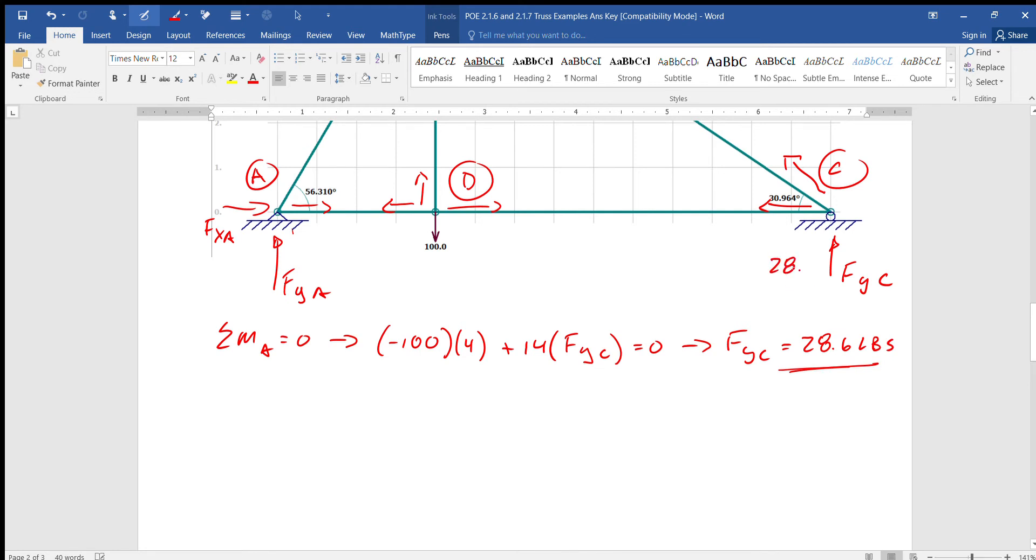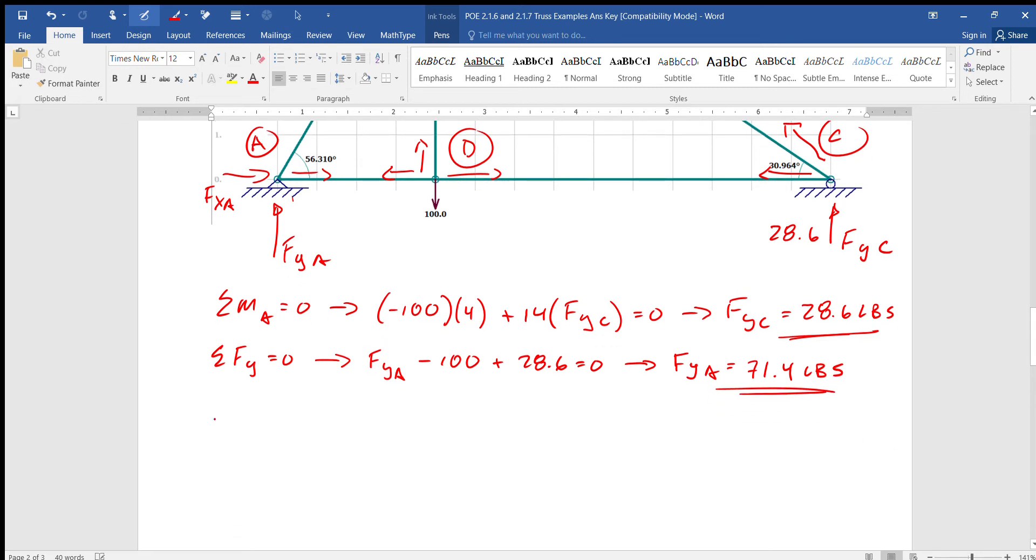Don't feel like I didn't write all this in earlier, it doesn't matter. And then sum of all the y's have to equal zero, so Fya which is going up, so it's positive, minus 100 plus 28.6 equals zero. So Fya equals 71.4 pounds.